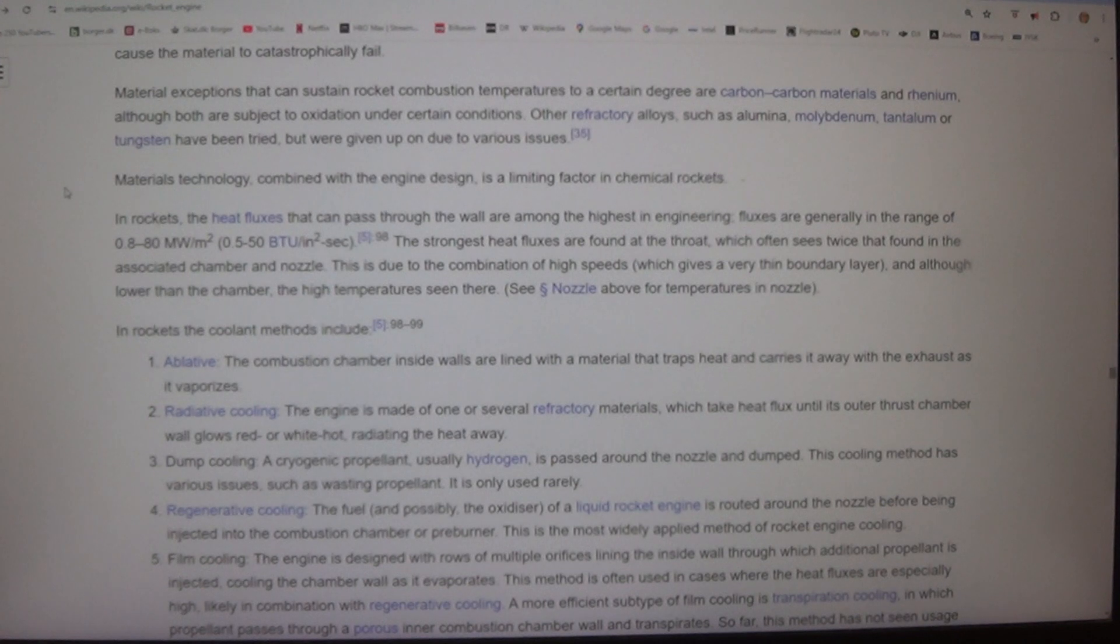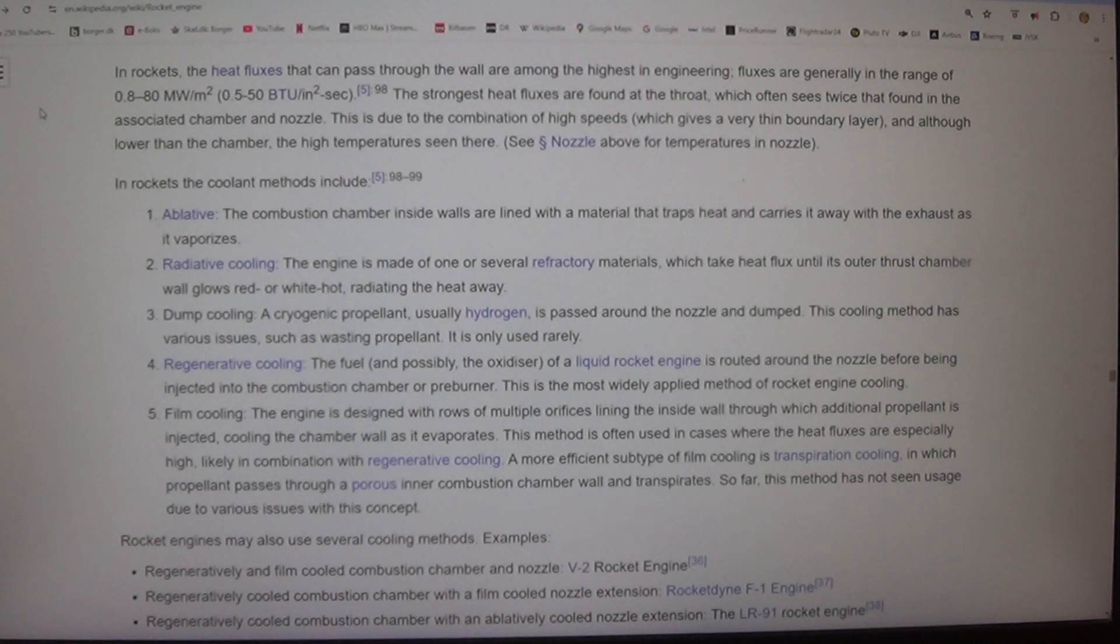Materials technology, combined with the engine design, is a limiting factor in chemical rockets. In rockets, the heat fluxes that can pass through the wall are among the highest in engineering. Fluxes are generally in the range of 0.8 to MW/m² (0.5-50 BTU/in²·sec). The strongest heat fluxes are found at the throat, which often sees twice that found in the associated chamber and nozzle. This is due to the combination of high speeds, which gives a very thin boundary layer, and although lower than the chamber, the high temperatures seen there.